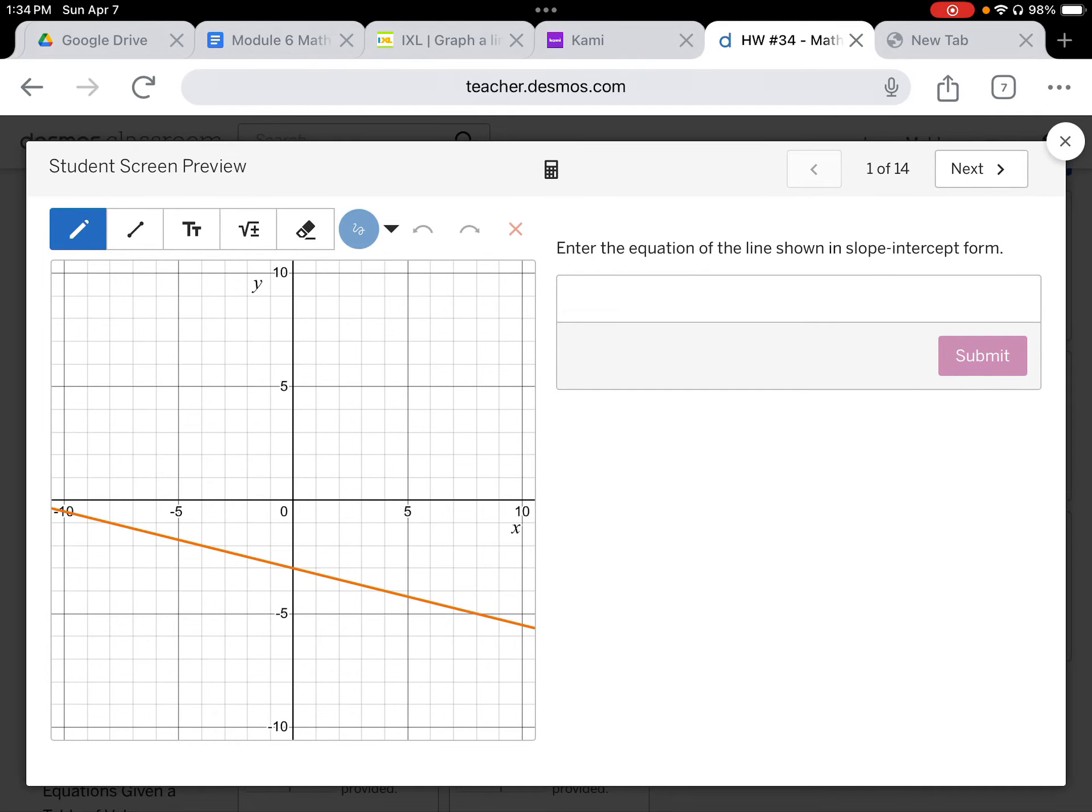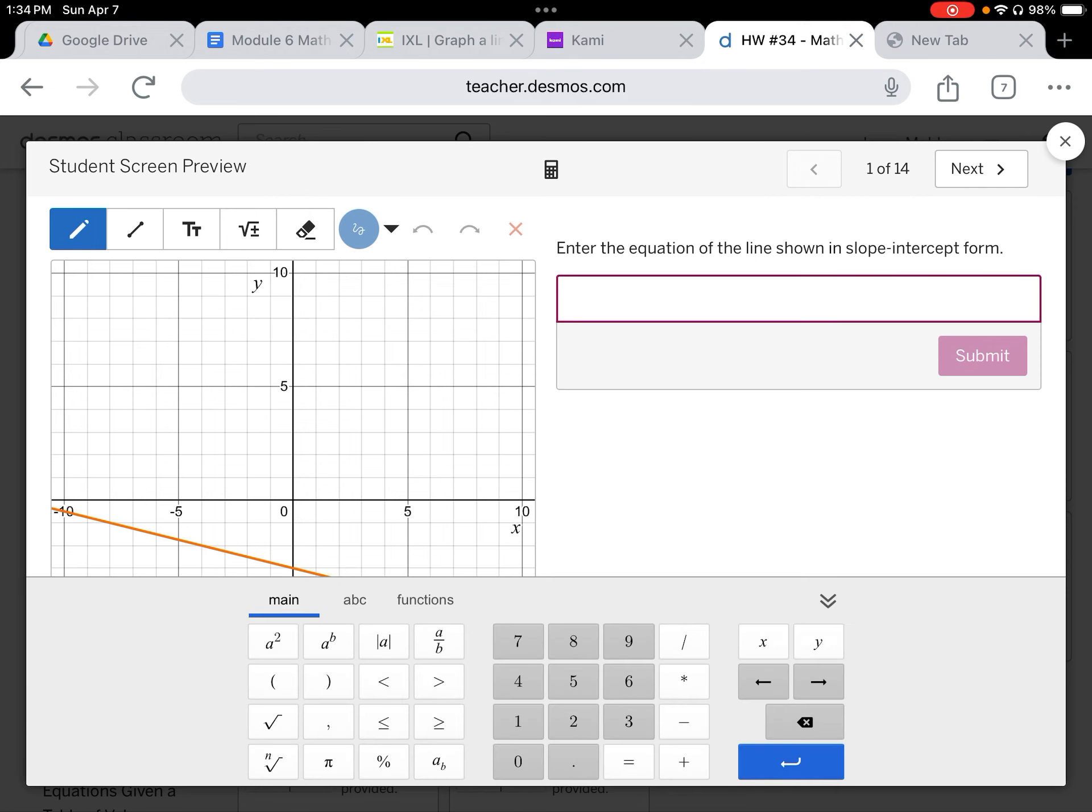This is homework number 34. It's a Desmos activity. It's made up of 14 slides. I'm going to work through the first eight, and then the remaining six slides will have some problems that are very similar to the first eight. So as a recap, before spring break, we were working on slope-intercept form.